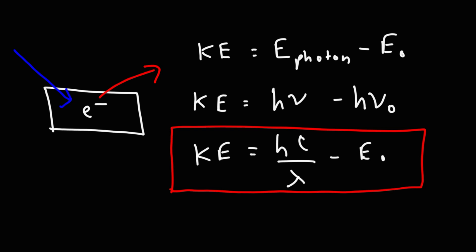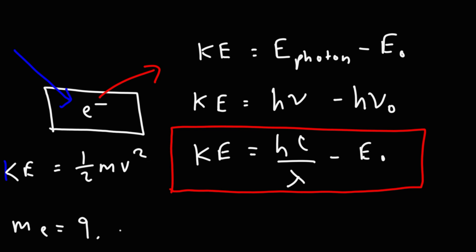Once you calculate the kinetic energy, sometimes you may need to calculate the speed of the electron. You can use the formula KE equals one half mv squared. The mass of an electron is 9.11 times 10 to the negative 31 kilograms.